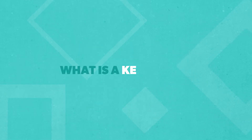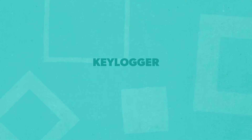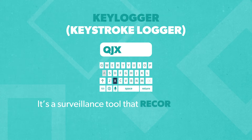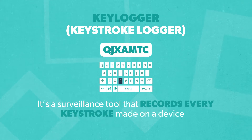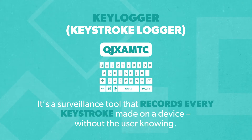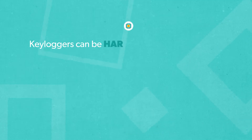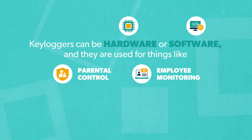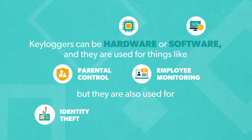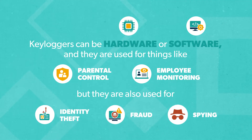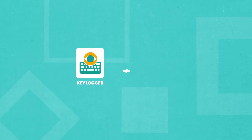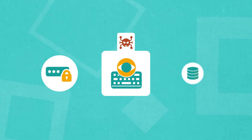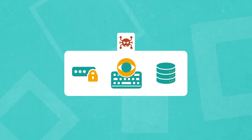So what exactly is a keylogger? Keylogger is short for keystroke logger — a surveillance tool that records every keystroke made on a device without the user knowing. Keyloggers can be hardware or software, and they're used for things like parental controls or employee monitoring, but they're also used for identity theft, fraud, and spying. A keylogger isn't a virus, but sometimes it's part of a virus or malware designed to steal passwords and other private data.